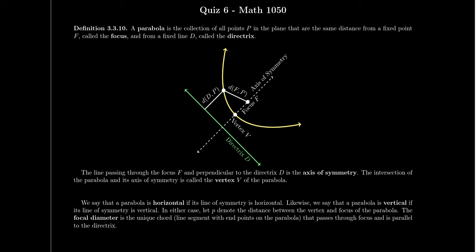This does coincide with the previous notion of vertex of a parabola. Next, if we take the line that's parallel to the directrix that goes through the focus and look at the points on the parabola associated to this line, we form a chord of the parabola which is referred to as the focal diameter. It kind of measures how big the parabola is going to be. If we say that the distance between the vertex and the focus is some distance P, then because of the equidistance condition the distance from the vertex to the directrix would likewise be P.